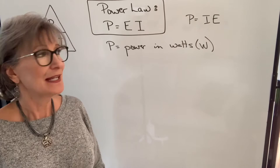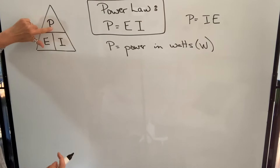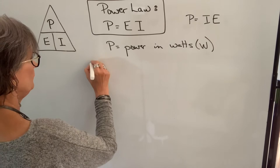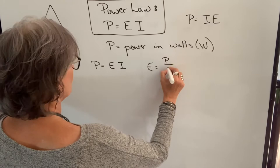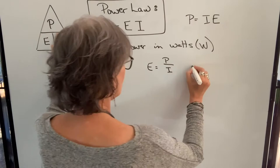Knowing this triangle, we've got three formulas contained in it. Power, cover that up, is equal to E times I, which we already know. If I want to isolate voltage, the E, it's going to be equal to P over I. And if I want to isolate current, I will be equal to P over E. So there's your three formulas contained in the power law.